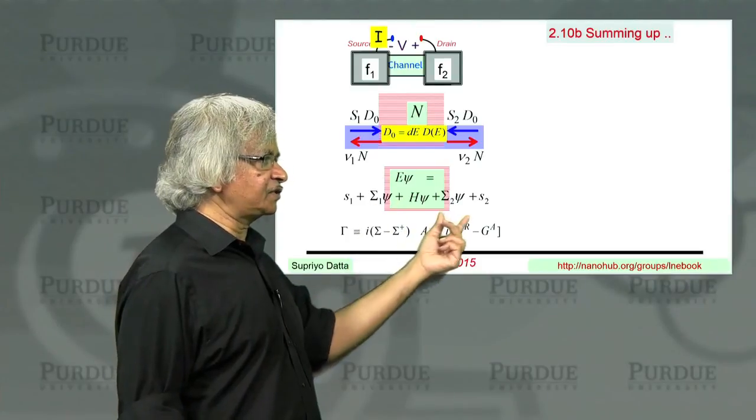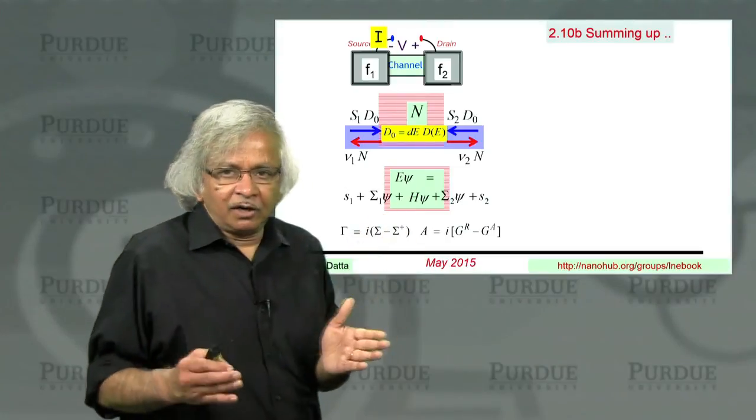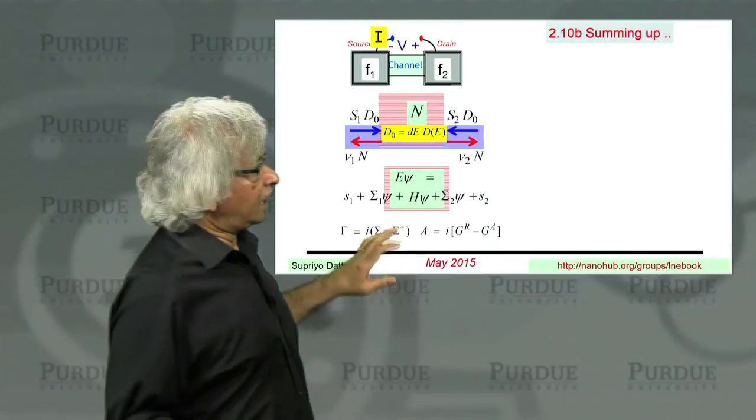How you can modify the Schrodinger equation and add these additional terms - the sigma 1, sigma 2, and the S1 and S2 - so that they correspond to this inflow and outflow.